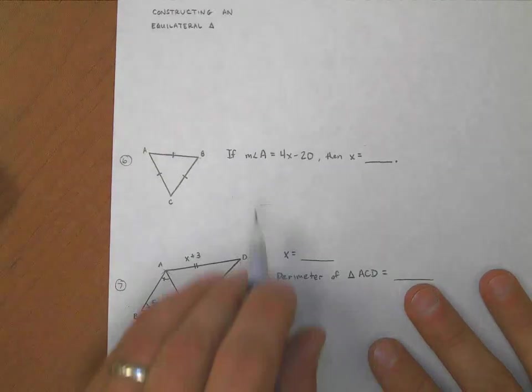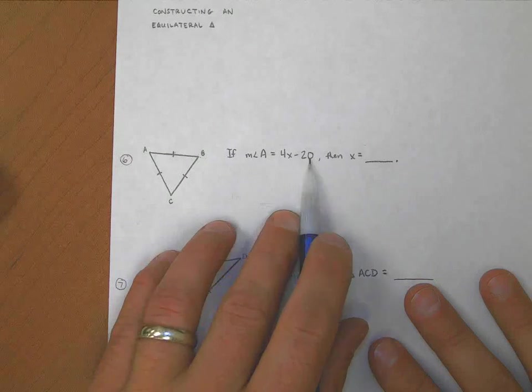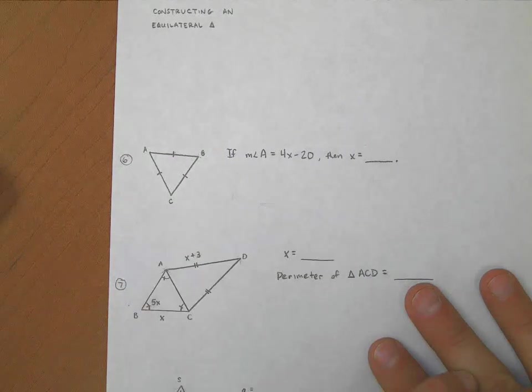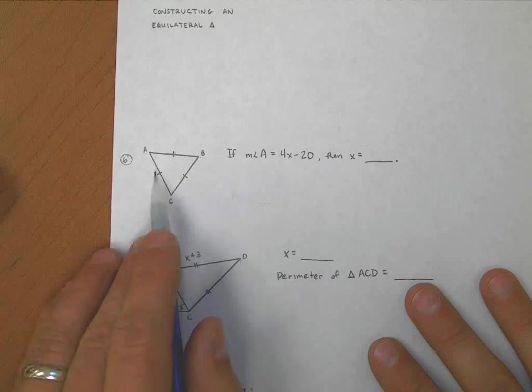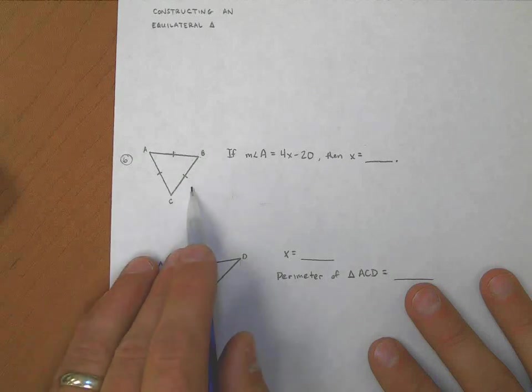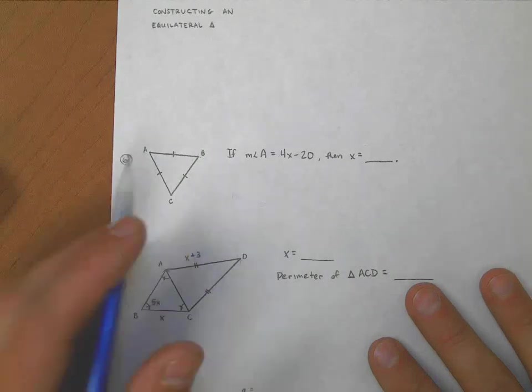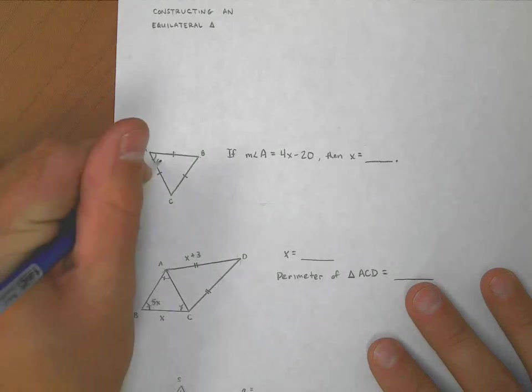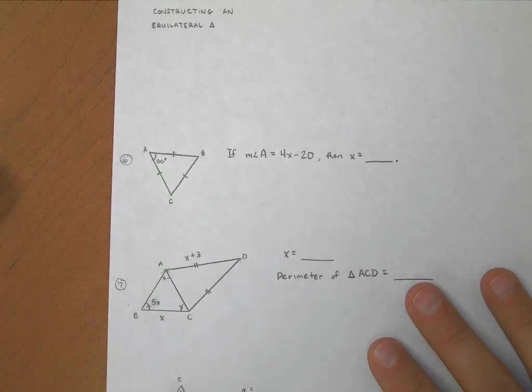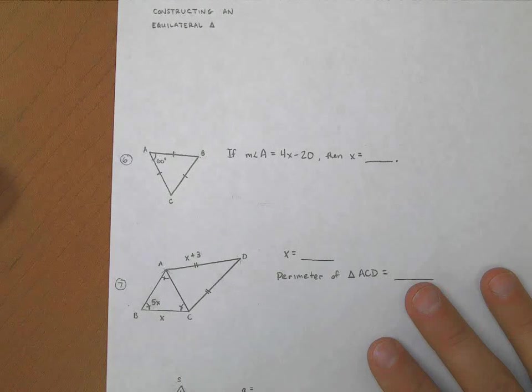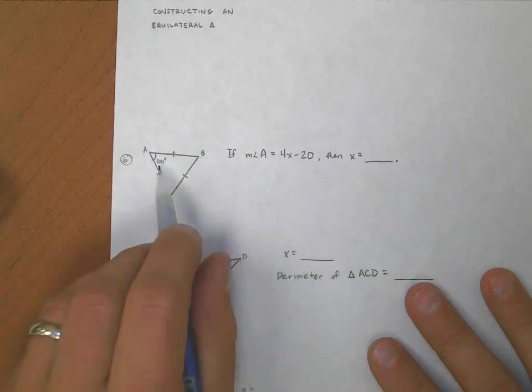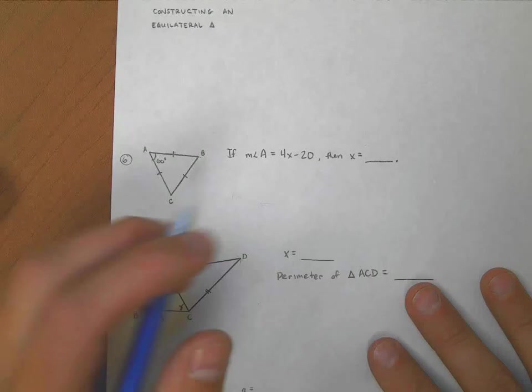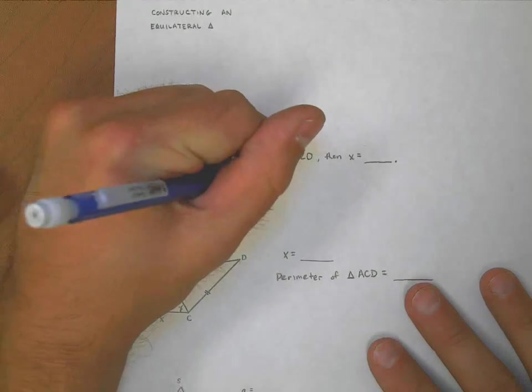Here's a pretty typical one. If the measure of angle A is equal to 4x minus 20, then what's x? Well, they gave me an angle, but they don't tell me anything about the angles here. But if I know that this is an equilateral triangle, then I know by definition that all the angles are the same, which means this must be 60 degrees. So they're telling me that 60 degrees is the same thing as 4x minus 20. Let's set them equal to each other.